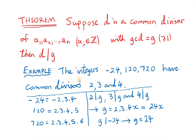Before proving this theorem, we look at an example. We take the integers minus 24, 120, and 720. Those integers have common divisors 2, 3, and 4. So the theorem says that each of those common divisors will divide the greatest common divisor g of the integers. So 2 divides g, 3 must divide g, and 4 must divide g. That means g must have factors 2, 3, and 4.